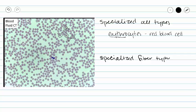Our other specialized cell type is a leukocyte. The prefix leuko means white, so leukocytes are our white blood cells. White blood cells generally stain some kind of purple. That cell there is our white blood cell surrounded by many red blood cells. Generally you can see the nucleus as very dark purple on our leukocytes, and then the cytoplasm usually stains a lighter color purple.